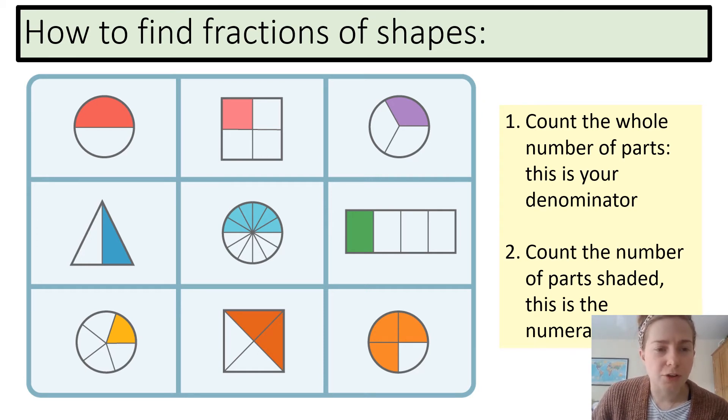So, my circle, one, two. I have two parts, so that's my denominator. Then I count the number of parts shaded, one. This is my numerator, so I have one half. That is also a unit fraction, as it has one as the numerator.